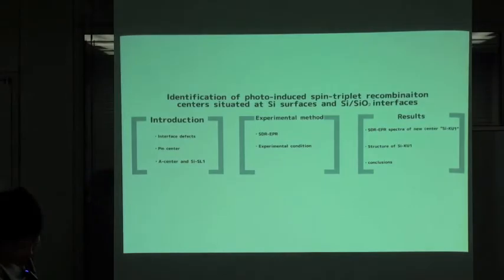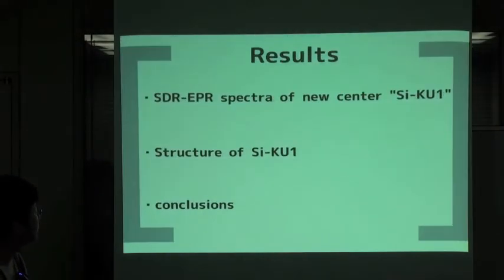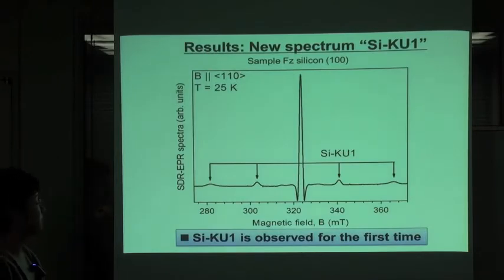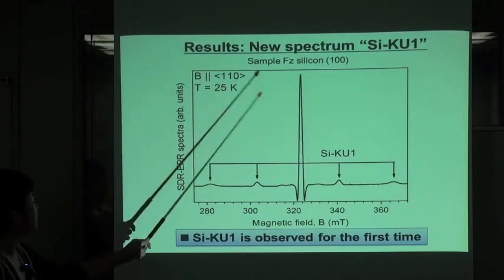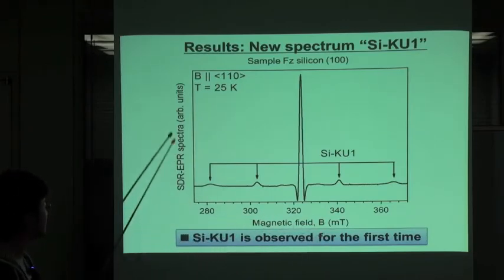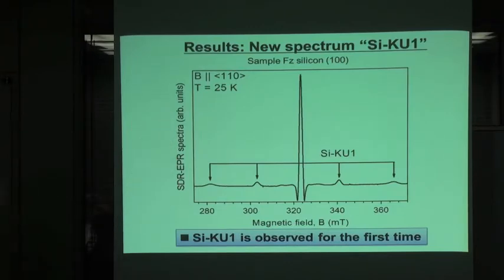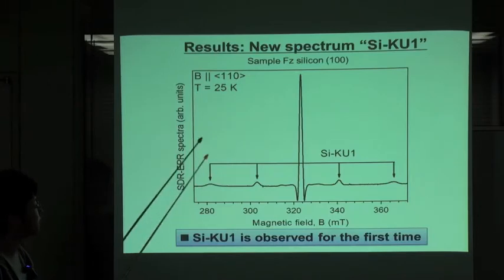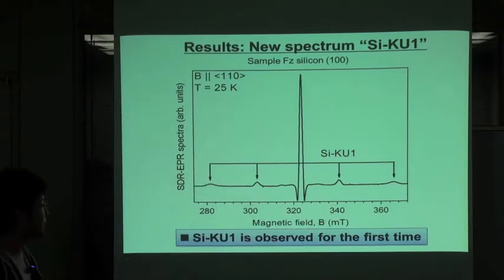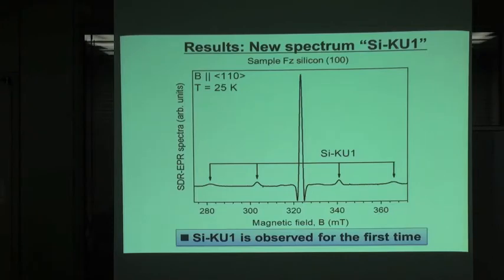First of all, I want to show you the spectra of SI-KU1. This is a result of the SDR-EPR measurement of the Czochralski-grown silicon. The horizontal axis is the magnetic field and the vertical axis is the SDR-EPR spectra. As you can see, there are four characteristic peaks that can be observed. We detected this signal for the first time, so we named this spectra as SI-KU1.